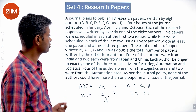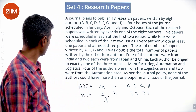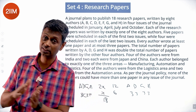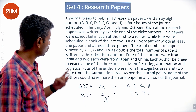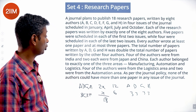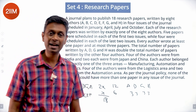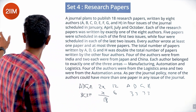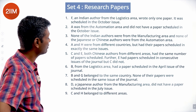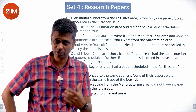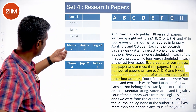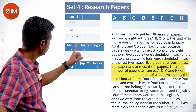Four of the authors were from India and two each were from Japan and China. Each author belonged to exactly one of three areas: manufacturing, automation, or logistics. Four authors were from logistics and two were from automation, which means two more were from manufacturing.